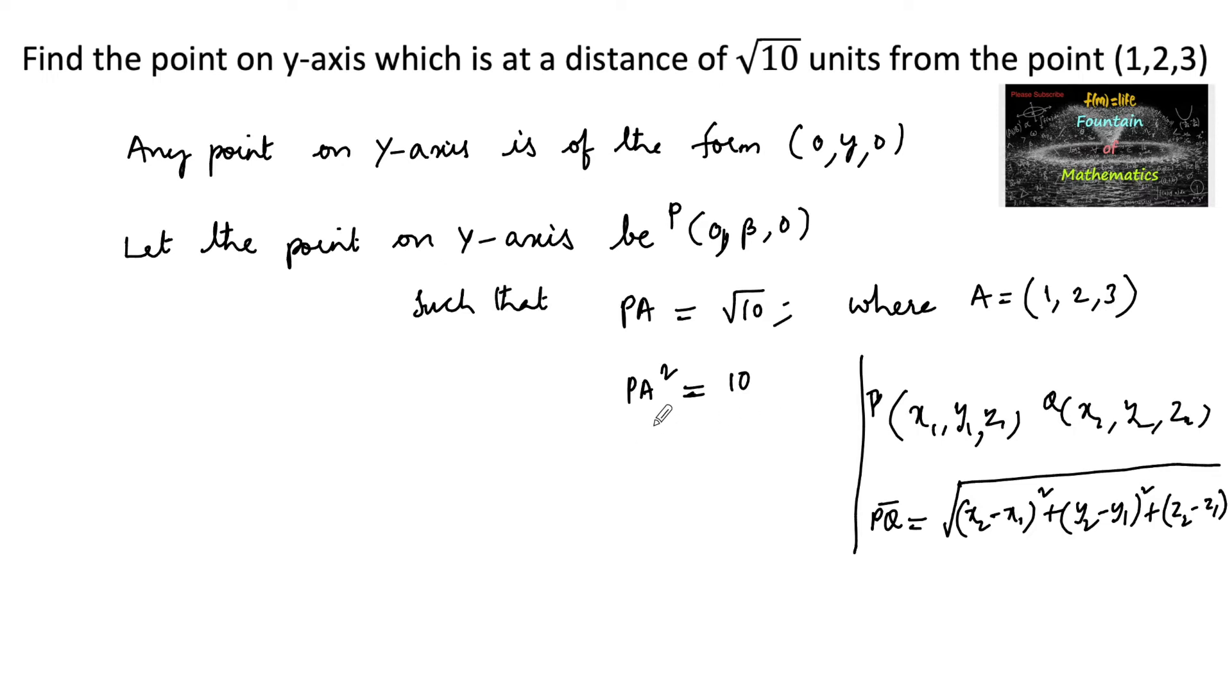Similarly, here PA square is equal to 10. PQ square means we can remove the root. So, PA square is equal to (1 minus 0) whole square plus (2 minus beta) whole square plus (3 minus 0) whole square, which is equal to 10, where this is x1, y1, z1 and here x2, y2, z2 applied.